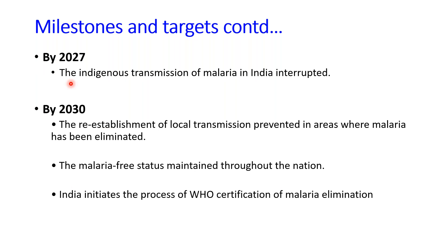By 2027, the target is for complete interruption in the indigenous transmission of malaria. By 2030, after transmission has been stopped, we need to prevent the reestablishment of malaria, especially in districts or states that have already achieved interruption of transmission.